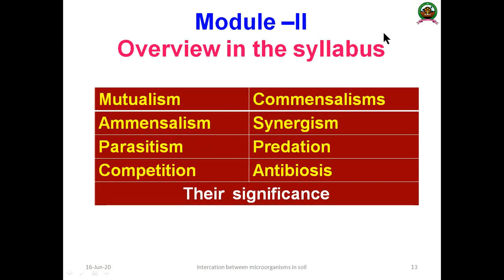In the coming sessions, we will discuss positive and negative interactions in detail. The syllabus covers mutualism, commensalism, amensalism, synergism, parasitism, predation, competition, and antibiosis, along with the significance of each interaction with relevant examples and case studies — discussed one by one.